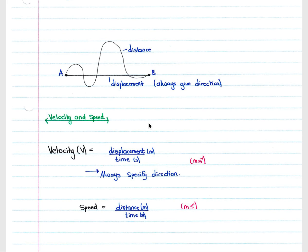Speed, on the other hand, is calculated using distance — the total length of the path taken by the object. It is also calculated as distance over time, with the unit meters per second. However, you do not give a direction because speed is a scalar quantity.